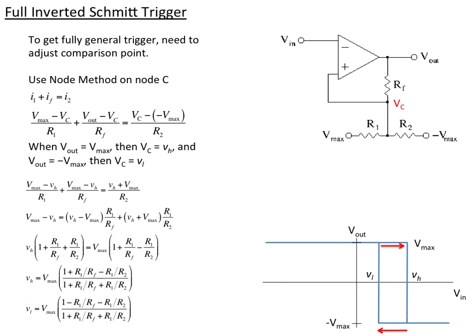So how do you pick R1 and R2 together? We want to solve for the ratio of R1 over Rf and R1 over R2 in these expressions. That is shown here, but in fact there's a mistake in this. Let me cross it out here. It's not Vmax here, it should be Vh. If you know where you want to set your levels, then you can calculate the ratio of the resistors that you need.